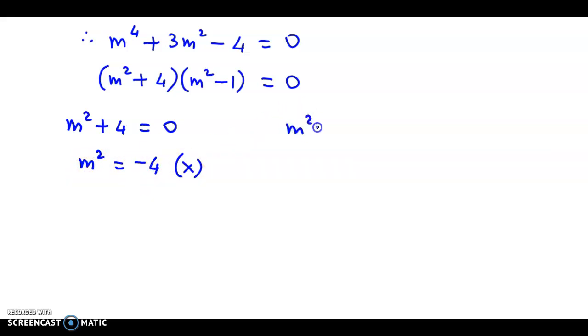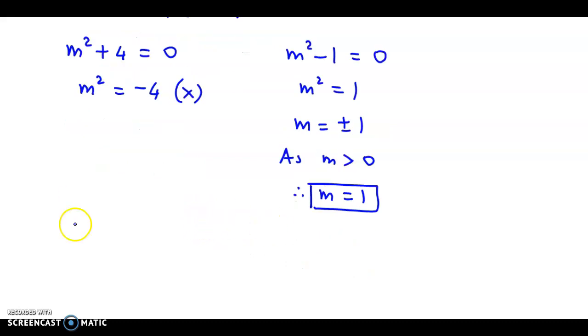Next, consider m^2 - 1 = 0, so we have m^2 = 1, so m = ±1. But again, as m is a positive value, therefore we select m = 1. And we are asked for the mean, and we know that the mean of a Poisson distribution is nothing but m, so the mean value is equal to 1.